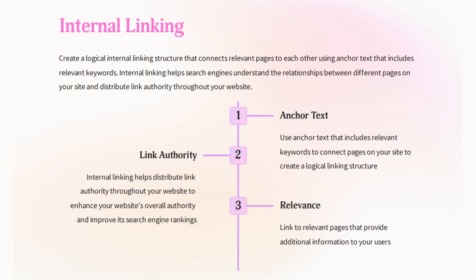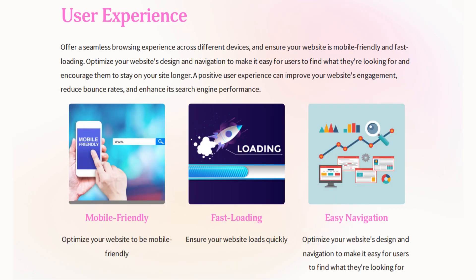Another element we touched on in other videos is internal linking, which is part of on-page optimization. Inside each page, link to other pages on your site. It is often overlooked but powerful — create logical internal linking structures connecting those pages. Use anchor text that includes relevant keywords. Internal links help search engines understand the relationship between your content and other pages on your site, distributing link authority throughout your website, which helps build your authority in Google's eyes.